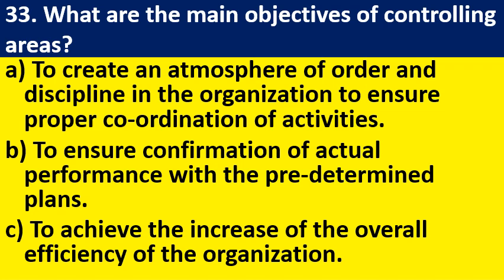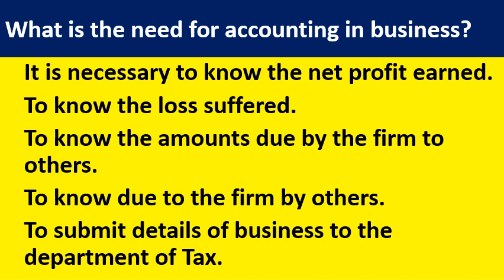What are the main objectives of controlling? To create an atmosphere of order and discipline in the organization, to ensure proper coordination of activities, to ensure confirmation of actual performance with pre-determined plans, and to achieve the increase of overall efficiency of the organization. What is the need for accounting in business? It is necessary to know the net profit earned, to know the loss suffered, to know amounts due by the firm to others, amounts due to the firm by others, and to submit details of business to the tax department.